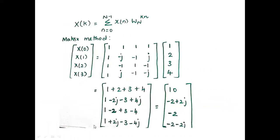Now we will see the calculation behind this. X(K) is nothing but the DFT of the signal. Here the input is [1, 2, 3, 4]. Using the matrix method we are going to compute the DFT of the signal. This is the twiddle matrix we have to write, followed by the input column vector [1, 2, 3, 4].